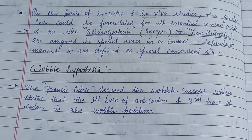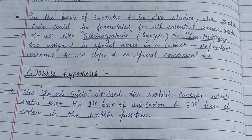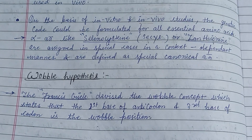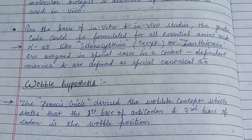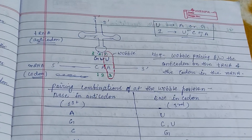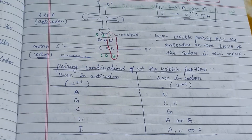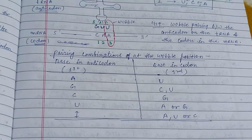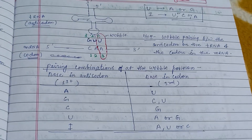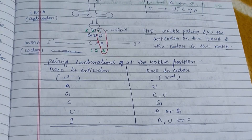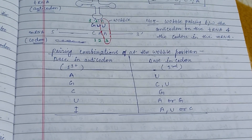The wobble hypothesis, devised by Francis Crick, states that the first base of the anticodon and the third base of the codon is the wobble position. In this figure, the tRNA acts as the anticodon and the mRNA serves as the codon that codes for the amino acid form, showing wobble pairing between the anticodon on the tRNA and the codon on the mRNA.